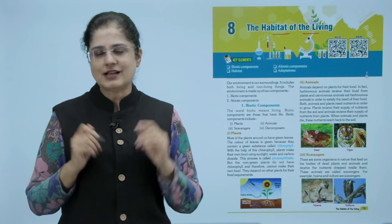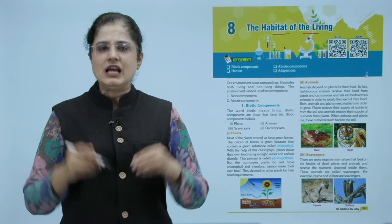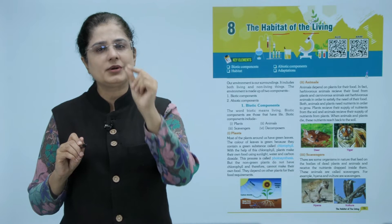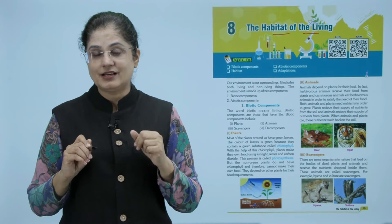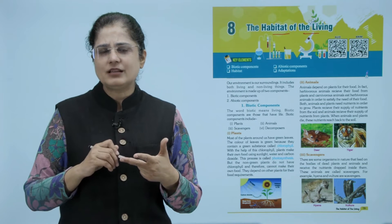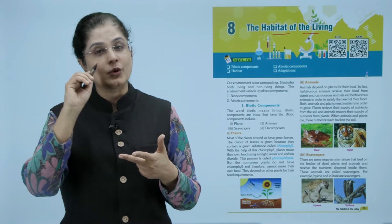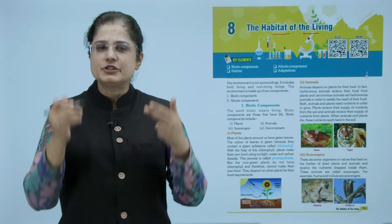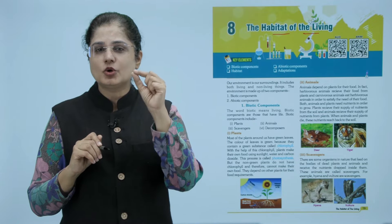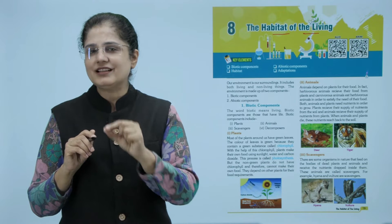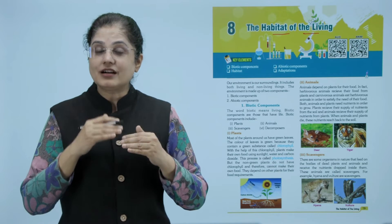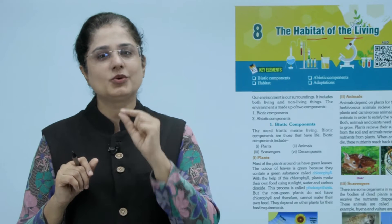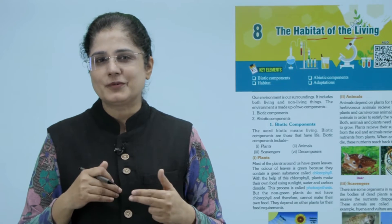Now we will study all these points. First we come to biotic components - all the living organisms or things in a given environment are called biotic components. These are of four types: plants, animals, and then there are some animals or plants that eat dead organisms, called scavengers, which also help keep our environment clean. The fourth category is decomposers - organisms that decompose dead organisms into smaller cellular portions, breaking them down so they mix back into the soil.